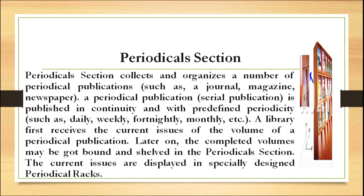The periodical section collects and organizes a number of periodicals such as journals, magazines and newspapers. A periodical — like a serial publication — is published in continuity with a predefined periodicity such as daily, weekly, fortnightly, monthly, etc. A library first receives the current issue of a periodical publication; later the completed volume may be bound and shelved in the periodical section. Current issues are displayed in specially designed periodical racks.